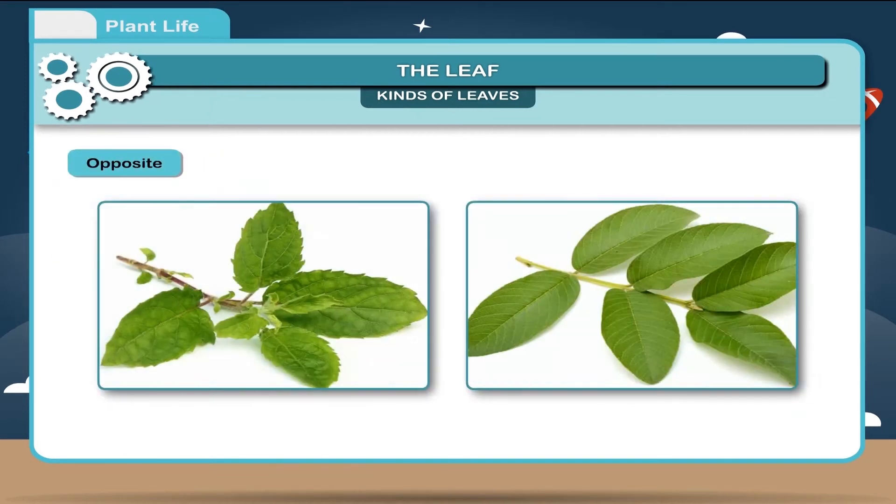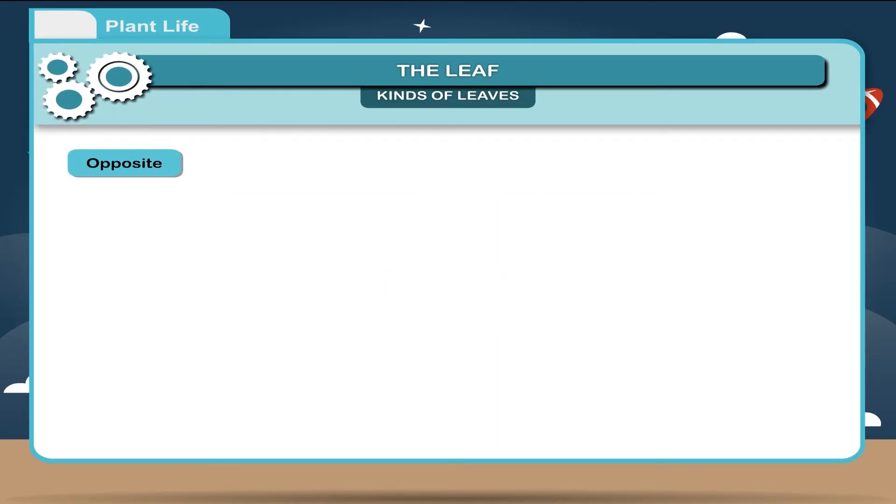Opposite. When two leaves develop at a node lying opposite to each other. Example, tulsi, guava.